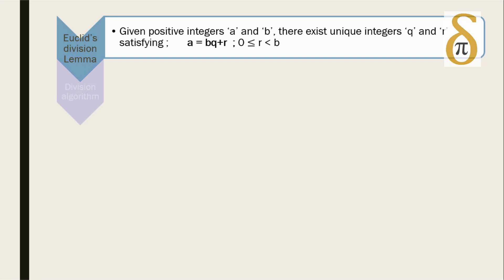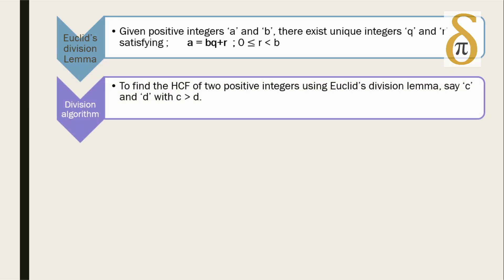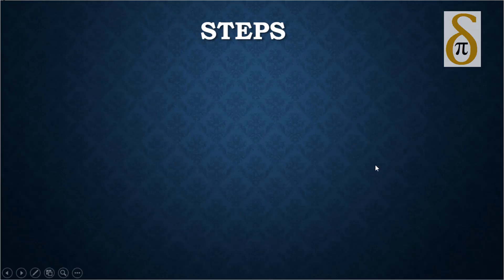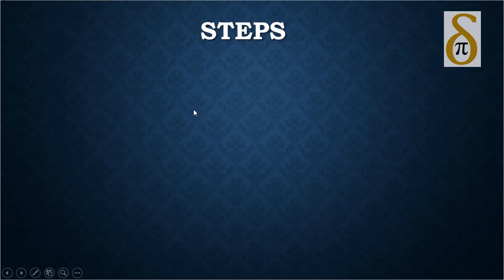Using Euclid's division lemma we are finding the HCF of two positive integers say c and d, and here c should be always greater than d. What are the steps we have to follow while calculating the HCF of any two numbers using Euclid's division lemma?